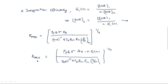Every time, the maximum radar range equation is updated to get a more accurate value of the maximum distance at which a target is located. First there was no noise component; later the noise component was added; now the integration efficiency related to the number of pulses received has also been added. Thank you.